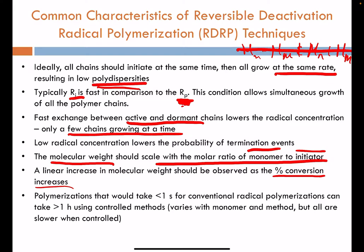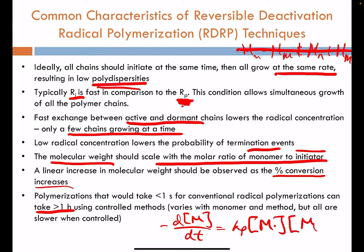Finally, these polymerizations that normally go very quickly will proceed more slowly — they'll often take hours instead of seconds in this controlled polymerization approach. Given the rate law for monomer consumption with Kp, concentration of radicals, and concentration of monomers — the radical concentration is going to be very low — and that results in a slow polymerization.